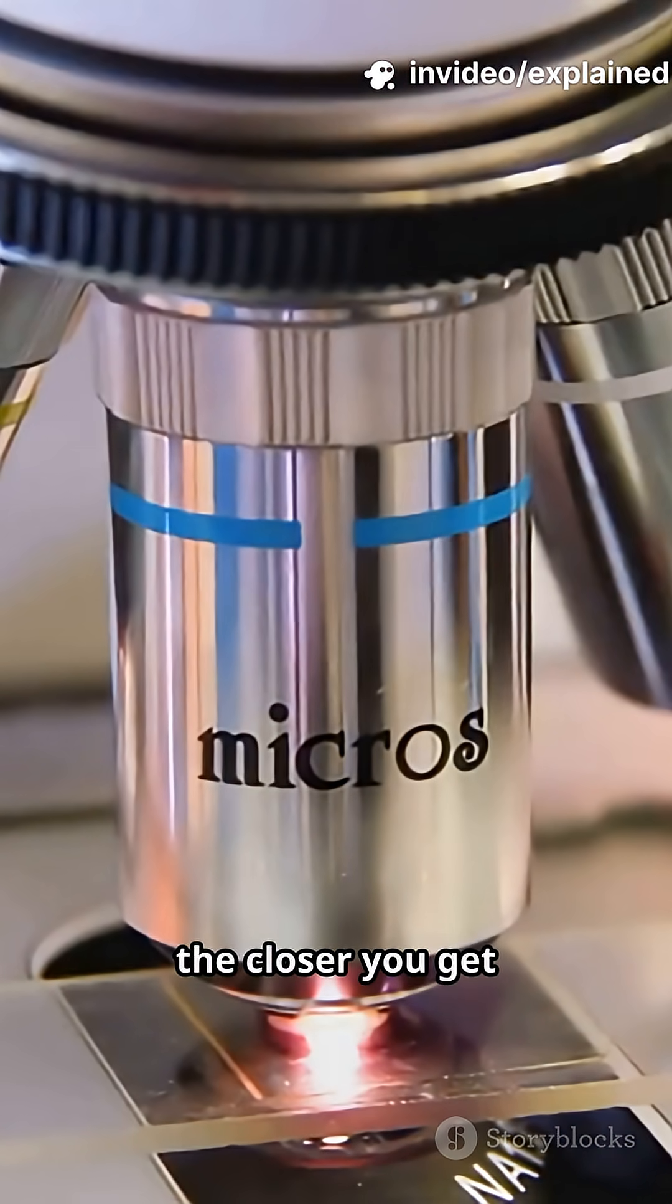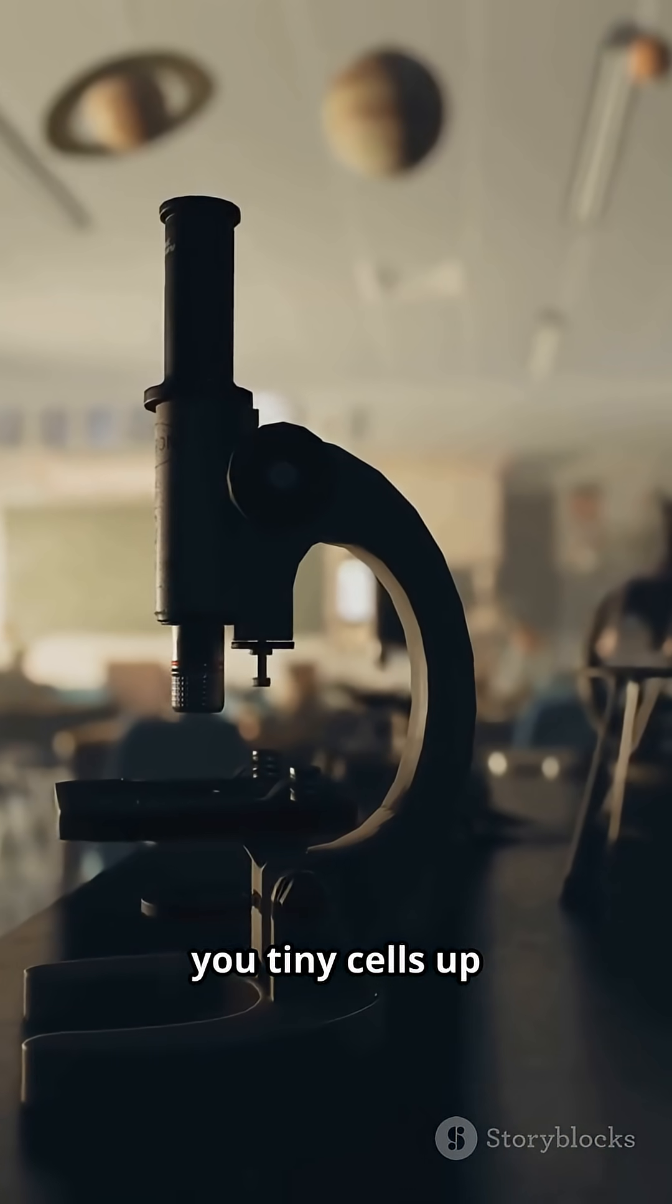The more powerful the lens, the closer you get to the action. Simple light microscopes can show you tiny cells up close.